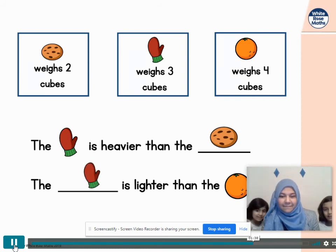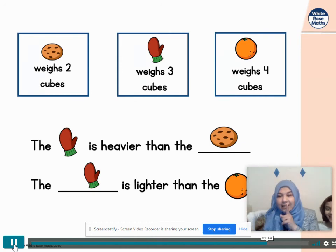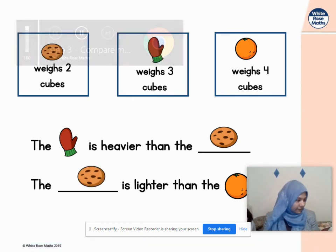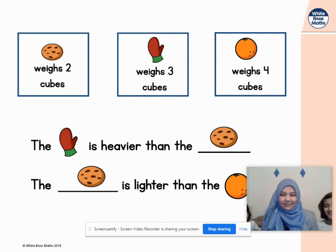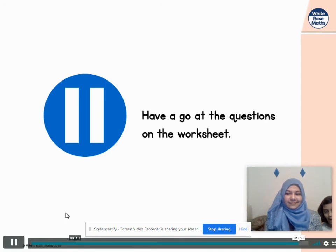The mitten is lighter than the orange. I told you. Did you think of something different? Yes. Two answers here. The cookie is lighter than the orange as well. But it said the mitten first. My answer first. You can have a go at the questions on your worksheet.